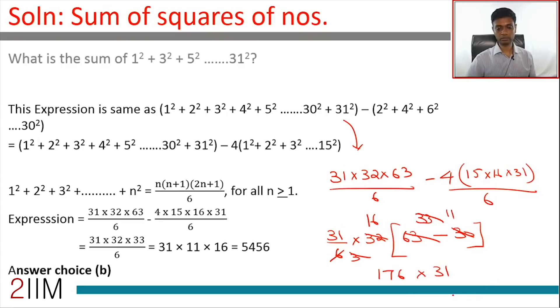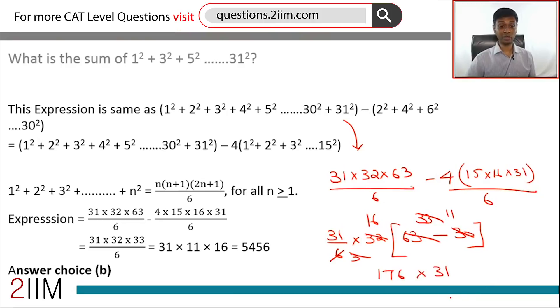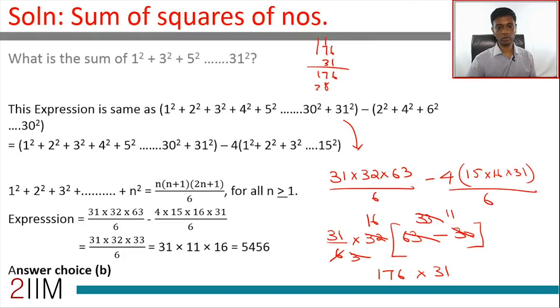176 × 31. [calculates] 5456. Or if you are handed a calculator, multiply this and find out. The correct answer is 5456.